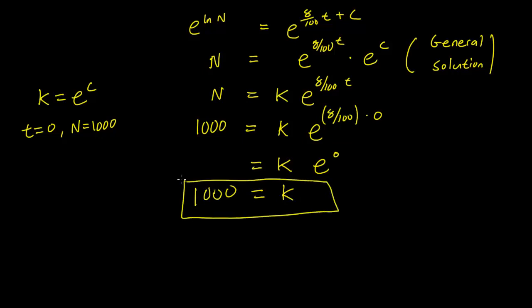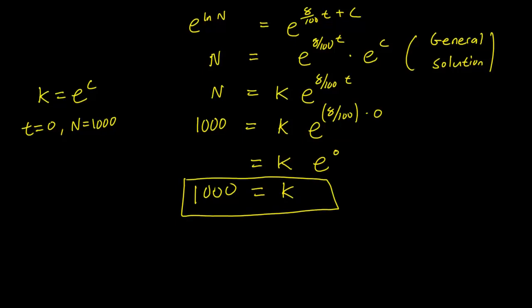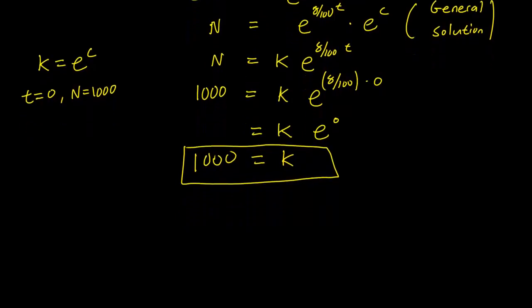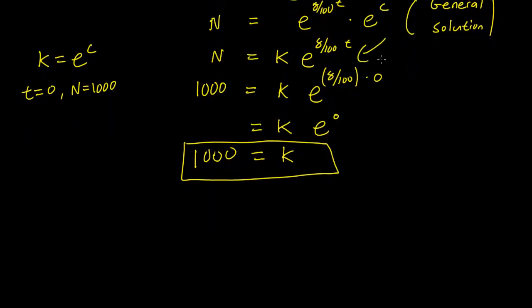And we have a specific solution. We plug this in our general equation. We have N equals 1000 e to the 8 over 100 times T. This is our specific solution.